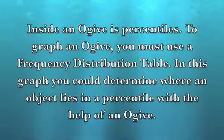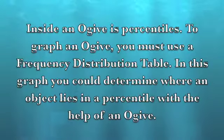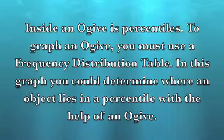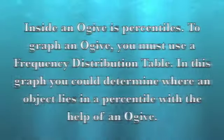Inside an ogive is percentiles. To graph an ogive, you must use a frequency distribution table. In this graph you can determine where an object lies in a percentile with the help of an ogive.